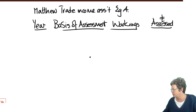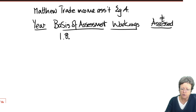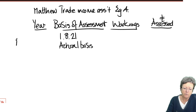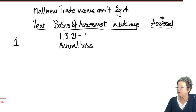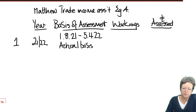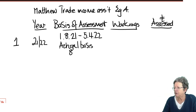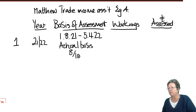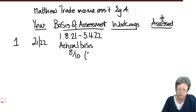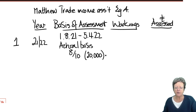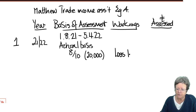Matthew started to trade on the 1st of August 2021. Year 1 is an actual basis — from date of commencement to the next 5th of April — making this the 21-22 tax year. That period is 8 months long. So it's 8/10ths of £20,000, giving a loss of £16,000. What goes in his income tax computation? Nil.